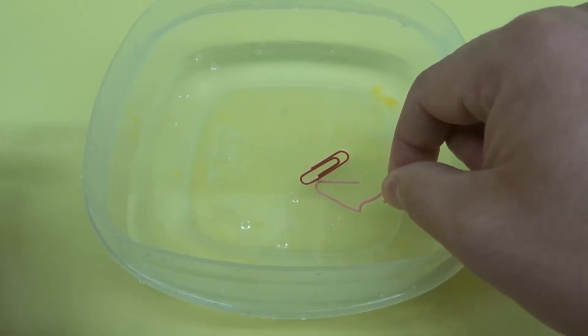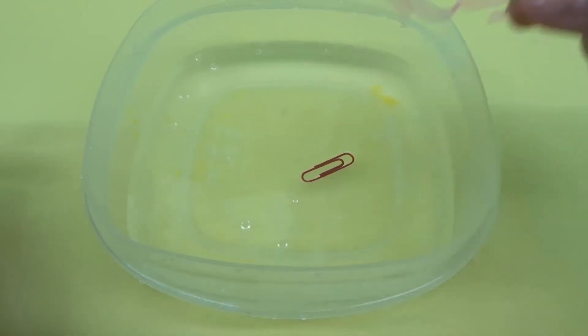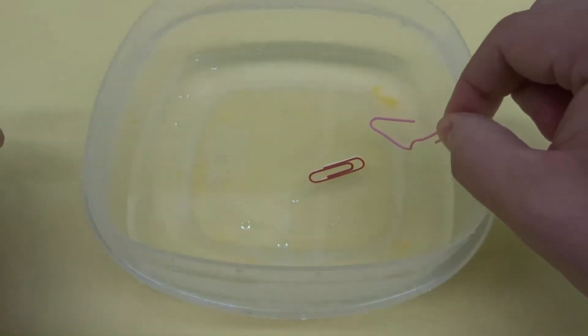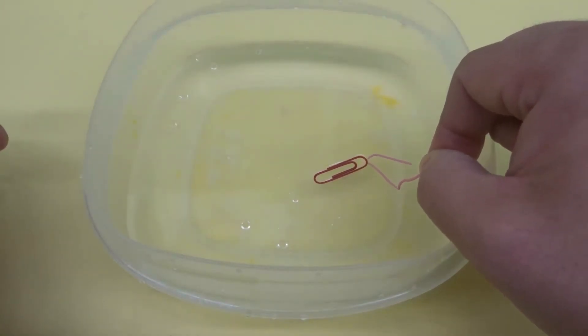As you can see right there, it's floating. The paperclip is floating on the water. I know it's kind of hard to tell. What I will do is I'll sort of swipe this under it to show you that it is floating. Look at that. It is floating on the water.